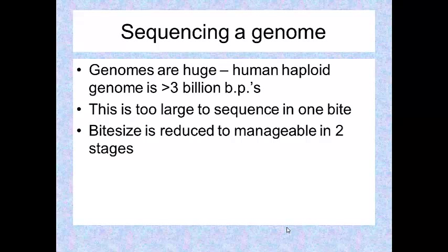This is DNA sequencing part 2. In this video we're going to look at how you go from determining the sequence of a stretch of DNA up to 1000 base pairs long, to now sequencing a whole genome. That's the great difficulty because genomes are vast - the human haploid genome is more than 3 billion base pairs long, which is far too large to sequence in one go. Instead, you need to reduce bite size greatly, and we do that in 2 manageable stages.